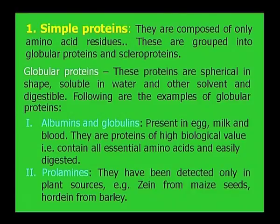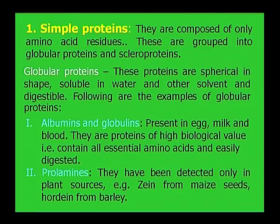Globular proteins are spherical in shape, soluble in water and other solvents, and digestible. Albumin and globulins are present in egg, milk and blood. They are proteins of high biological value and contain all essential amino acids that are required for the cells and are easily digested.